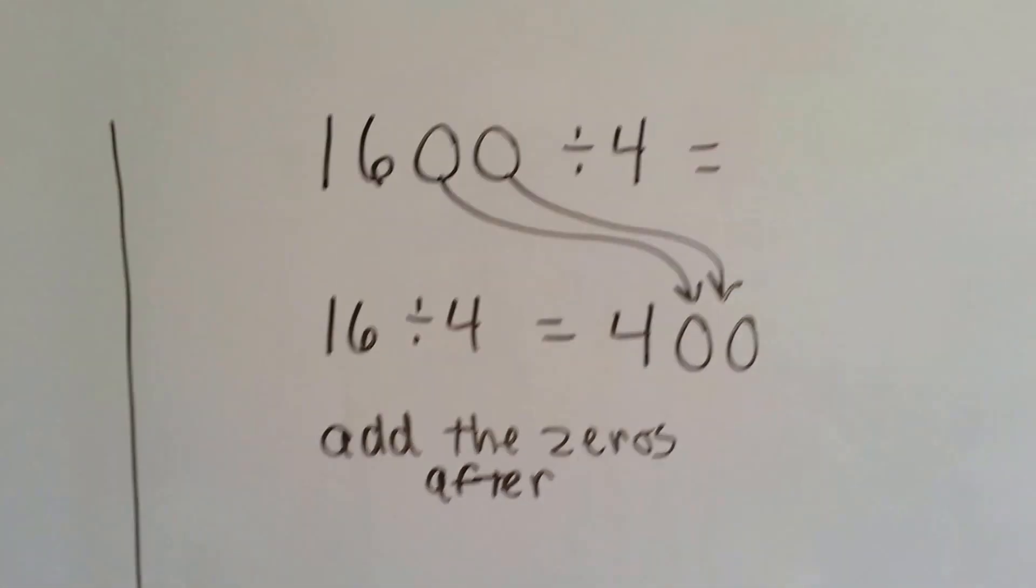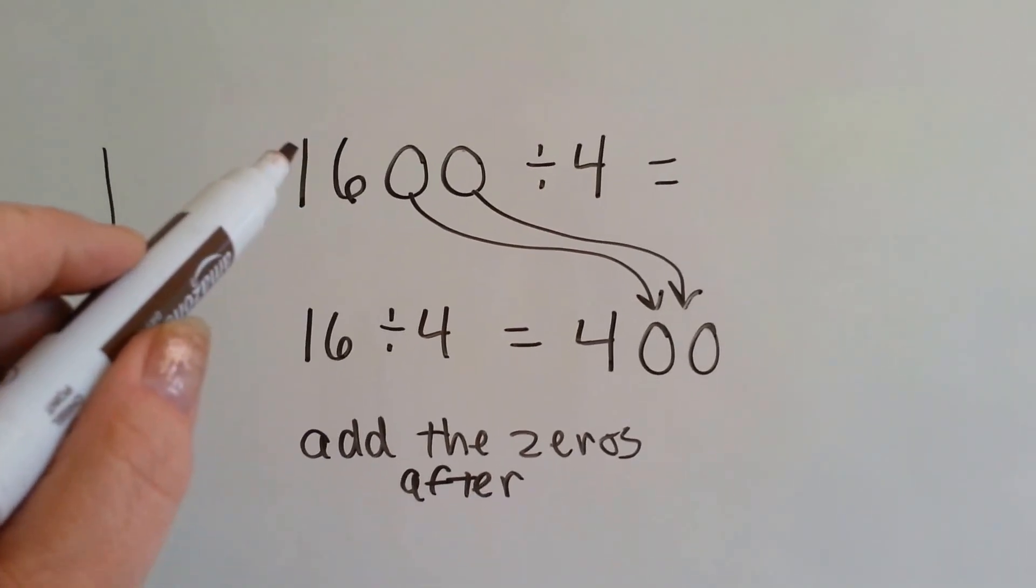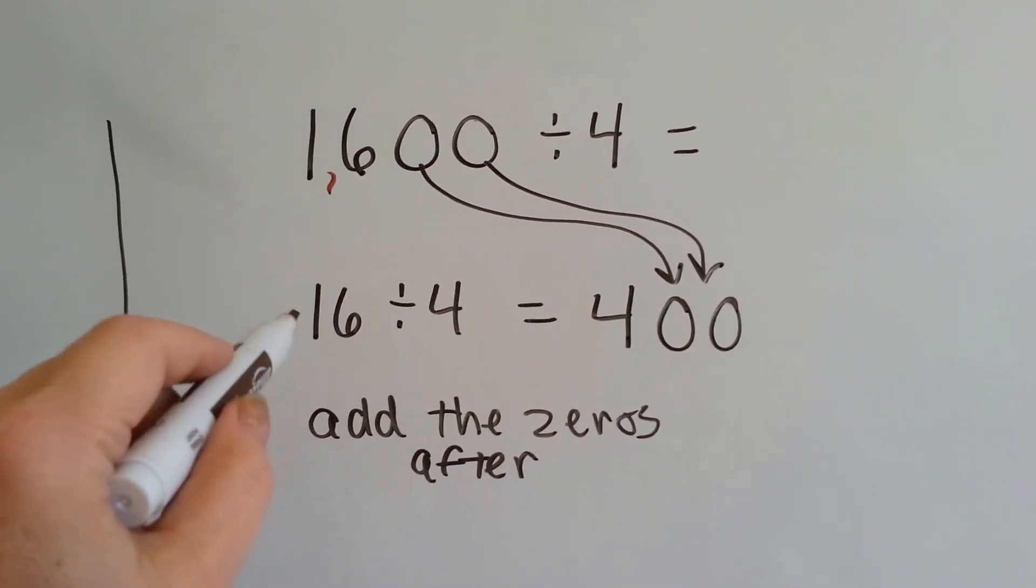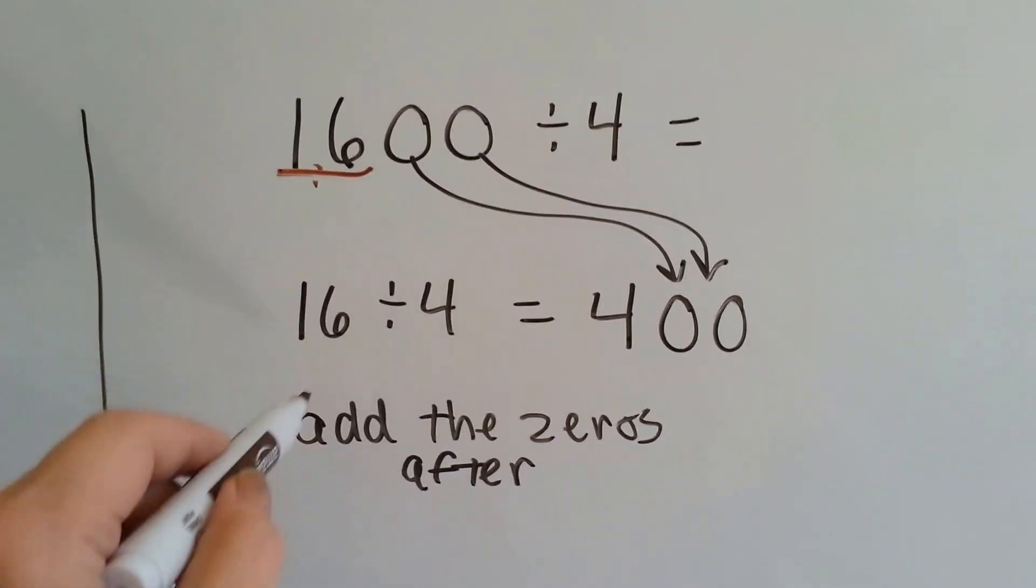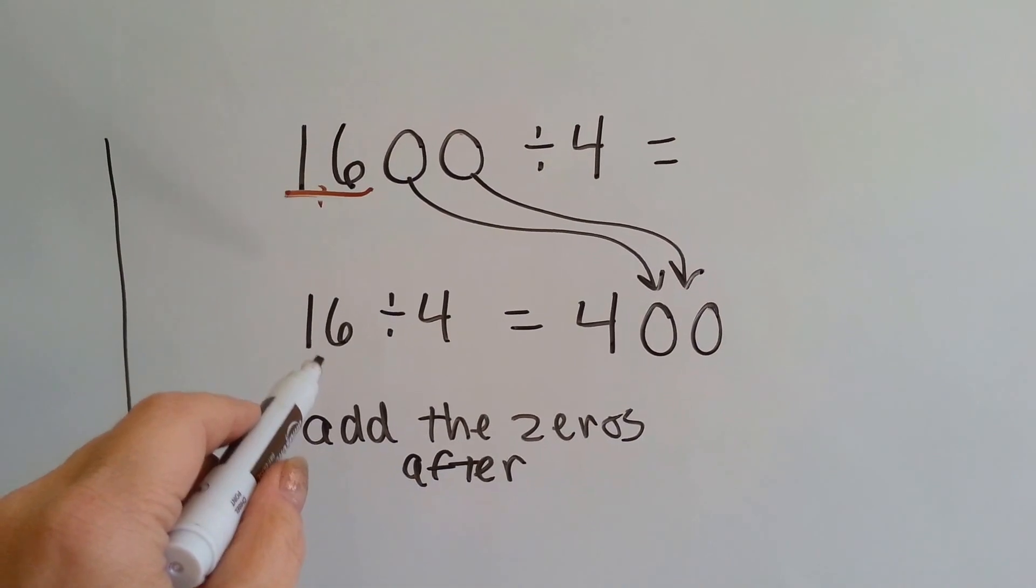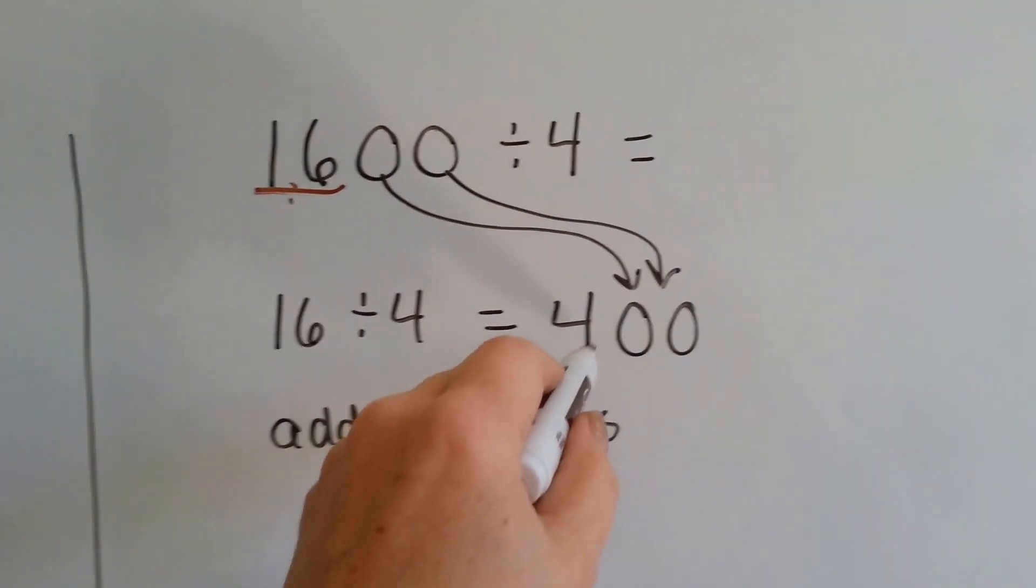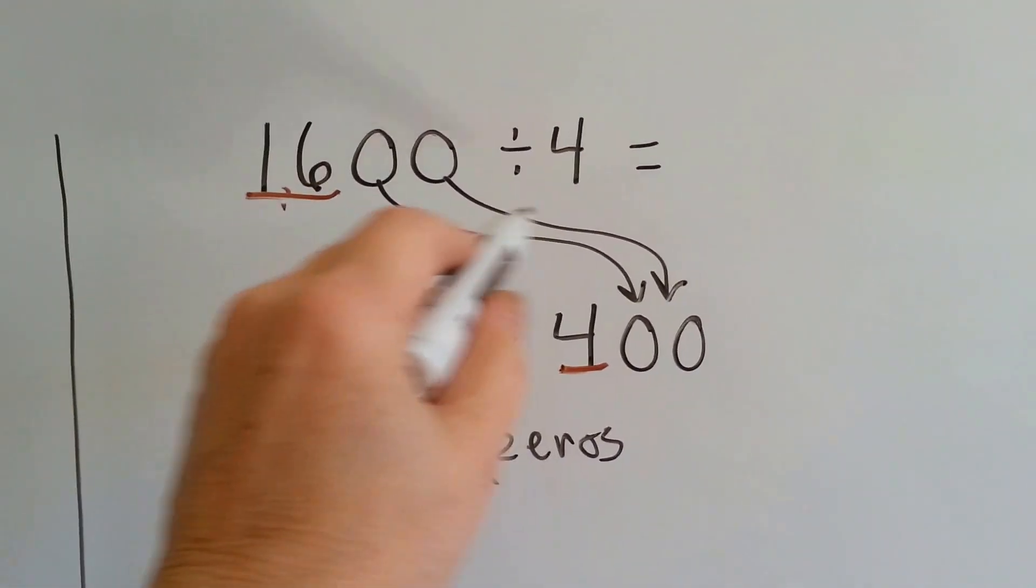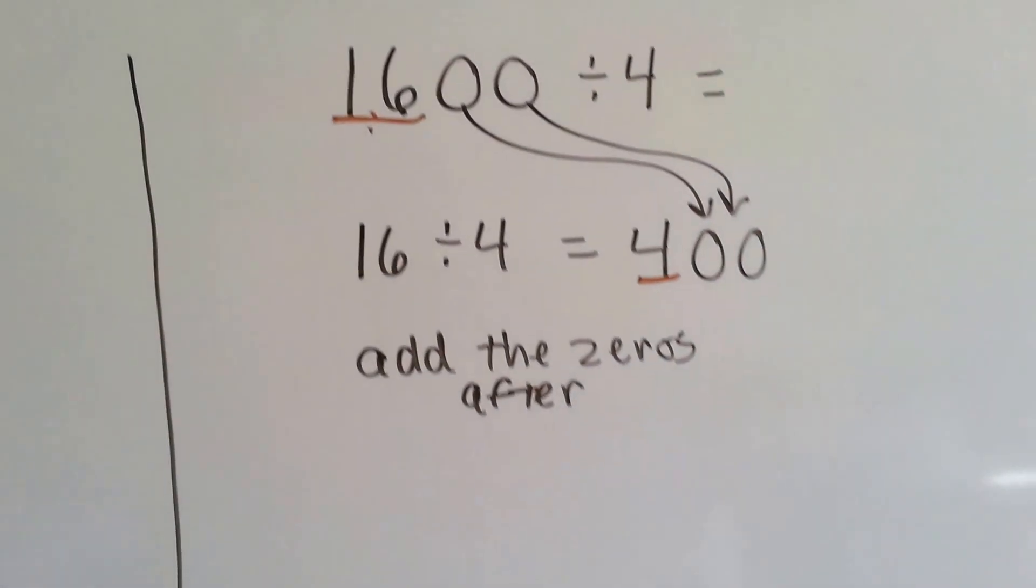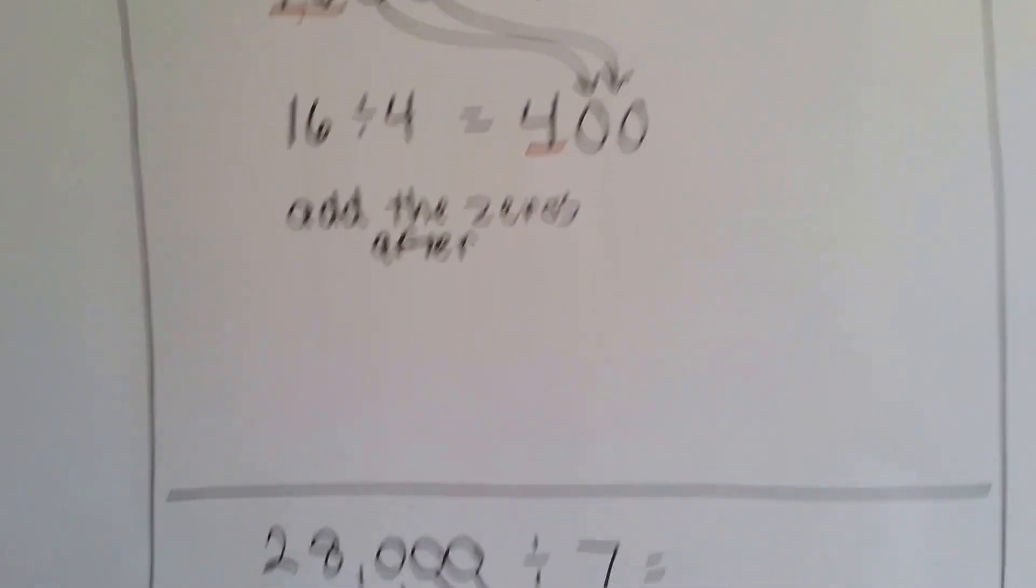Alright, let's try this one. I bet you can do this one. 1,600 divided by 4 becomes 16 divided by 4. 4 times 4 is 16, so 16 divided by 4 is 4. And then we add the 2 0's after. You could almost do that mental math, couldn't you?